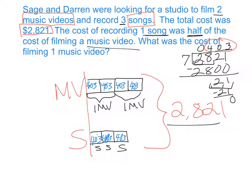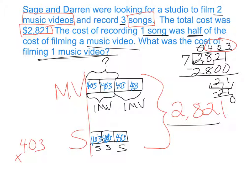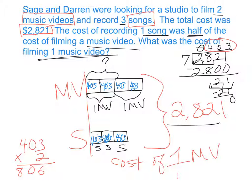Now we need to look back to see what our question was. What was the cost of one music video? I should have drawn a bracket to show I was looking for one music video and put the question mark there. One music video equals 403 times two, because two boxes equal one music video. Three times two is six, two times zero is zero, four times two is eight. Full sentence: the cost of one music video is $806.